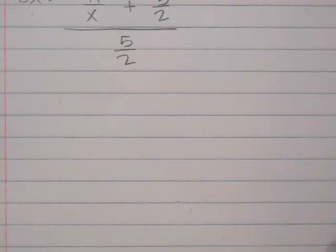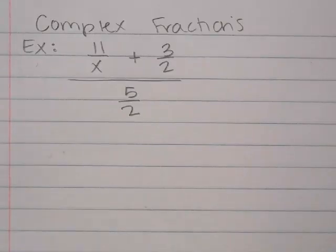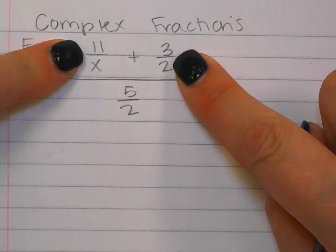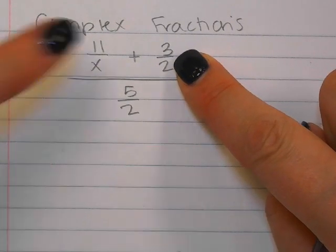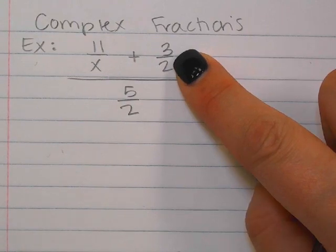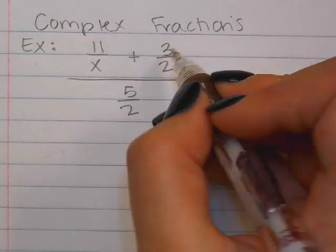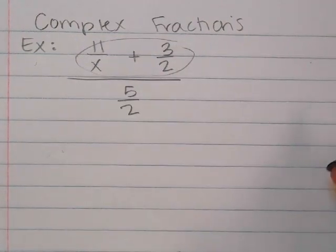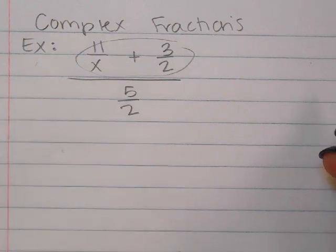So we have something on top divided by something on bottom. Before we can do anything else, we have to be able to add these fractions together. We know that when we add or subtract fractions, we have to have a common denominator. So the very first thing I'm going to do is look at the fractions on the top or the bottom that are being added or subtracted, and get a common denominator between those two.